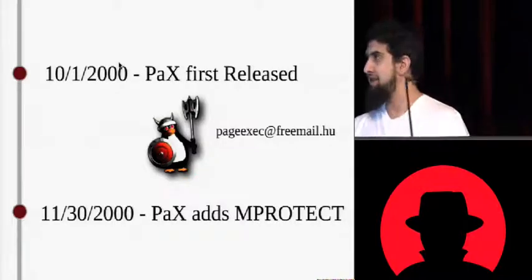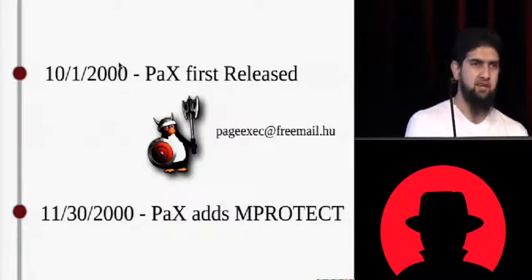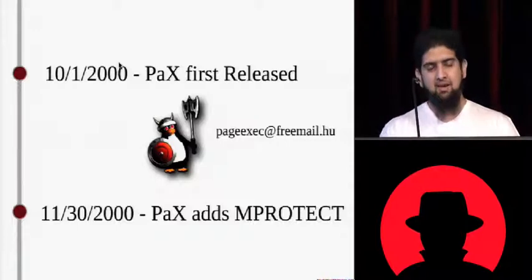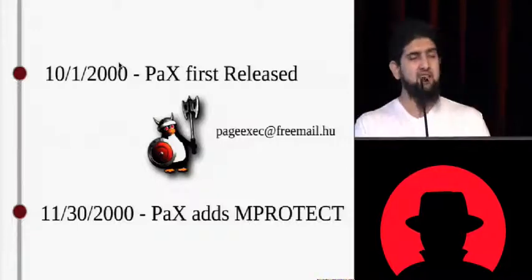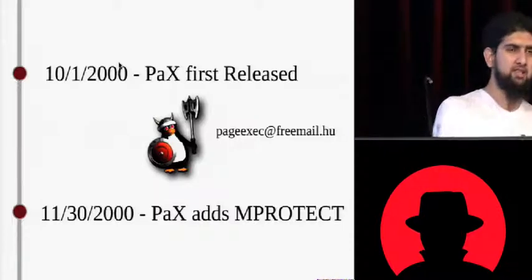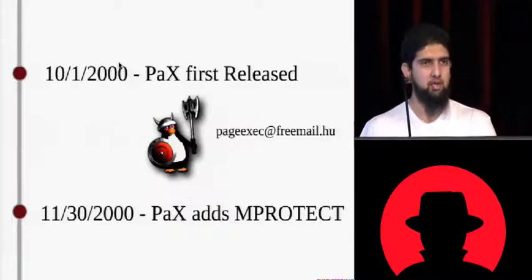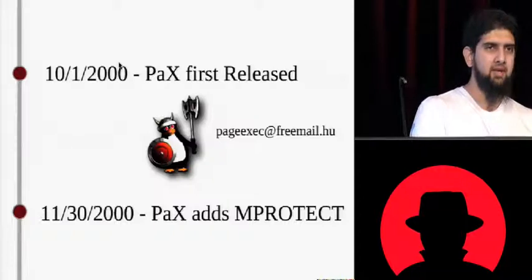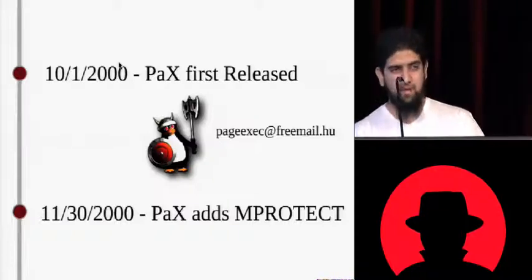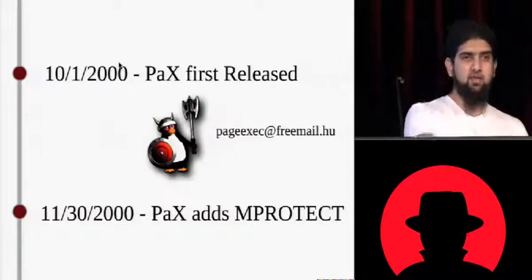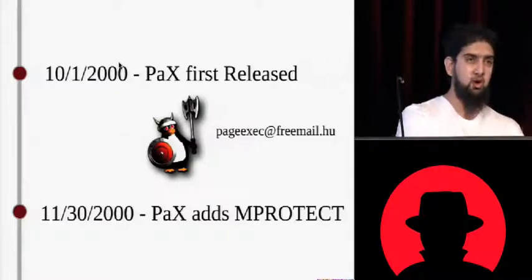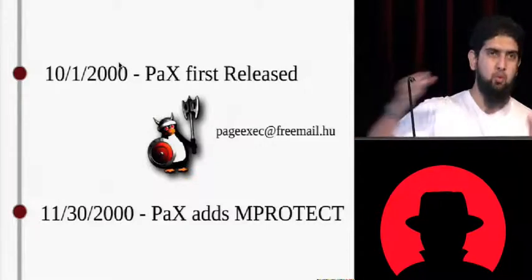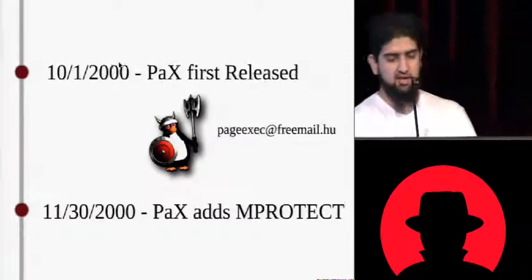In 2000, PAX releases and essentially PAX is a patch for the Linux kernel that tries to end exploitation. We're going to see PAX coming up again and again. Essentially what PAX does is the x86 processor at this point, the page table doesn't support a bit for whether something's executable or not. It basically says, is the stuff readable or is the stuff writable, but everything's executable. PAX uses some clever mojo that we'll discuss later to basically force protection on regions of space. The mProtect patch that they added was then to try to defend against solar designers' return to lab C attack.